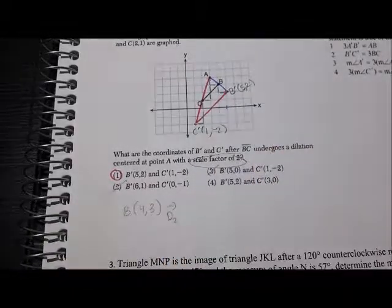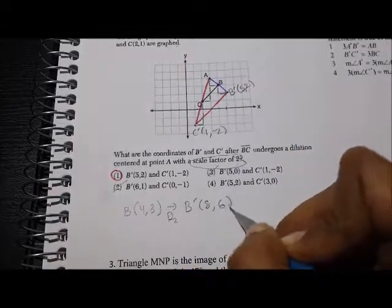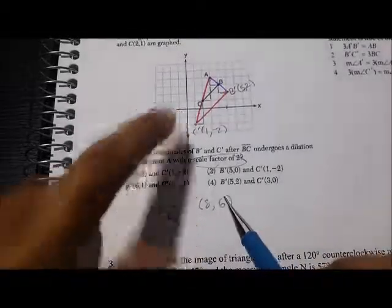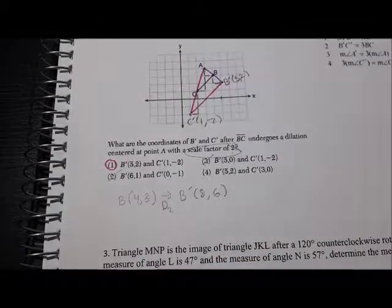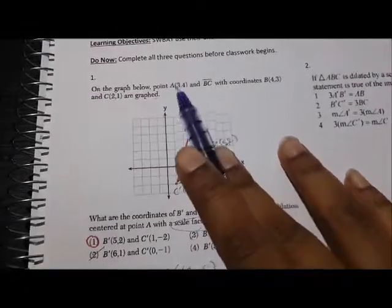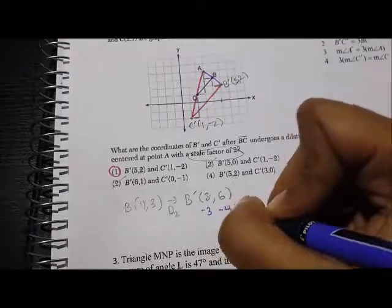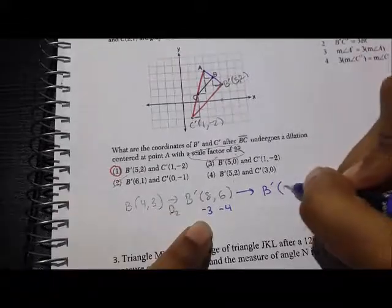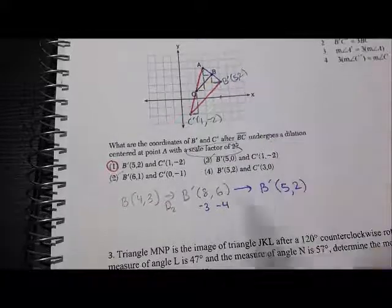So under a dilation of 2, your B' is going to be (8, 6). Now, this dilation works if you're centered at the origin, but we're centered at point A. So what you want to do is subtract whatever the coordinates of point A are, in this case (3, 4), from this. So it's going to be minus 3, minus 4, and what that's going to get is the actual B'. So 8 minus 3 is 5, and 6 minus 4 is 2, which is exactly what we got here on the diagram.